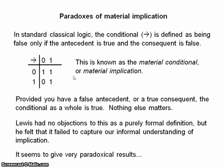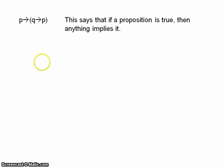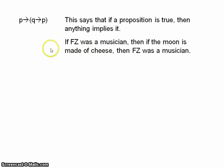Two, in particular, bothered Lewis. So, the first one is if P, then if Q, then P. And, basically, what this tells us is that if a proposition is true, then anything implies it. So, for example, it's true that Frank Zappa was a musician. So, we might say this, for example.